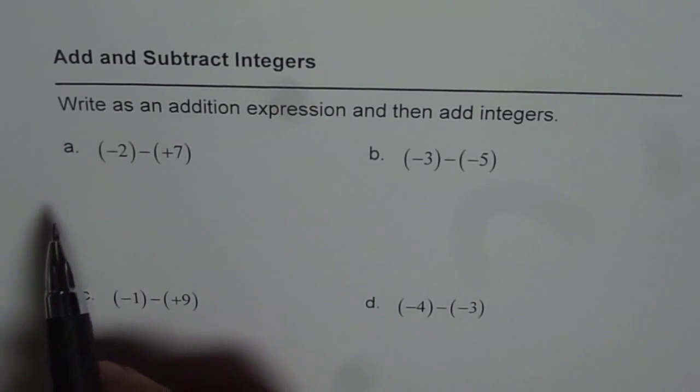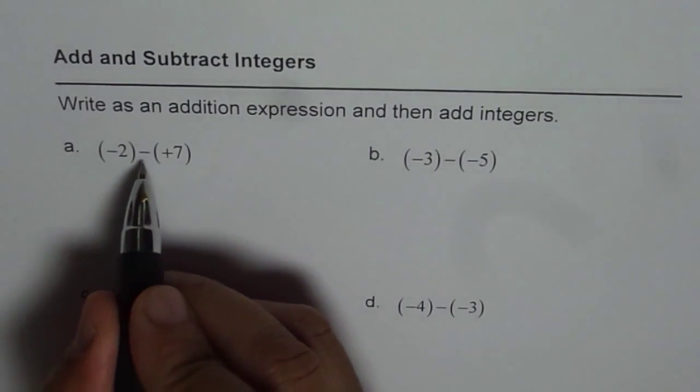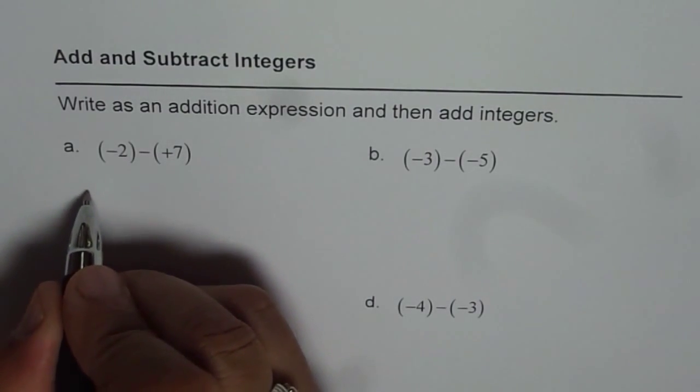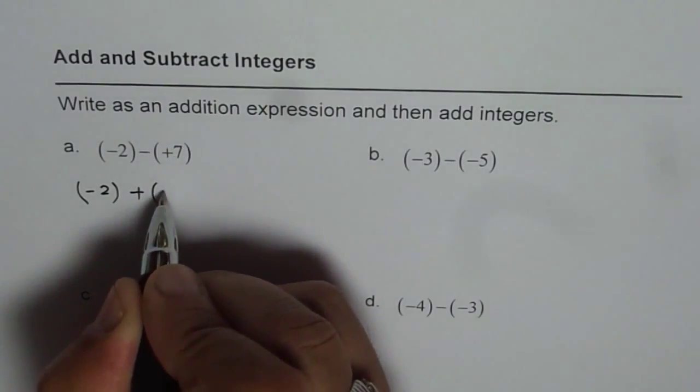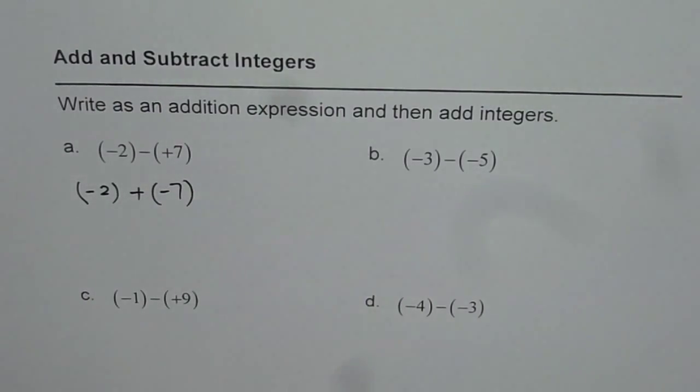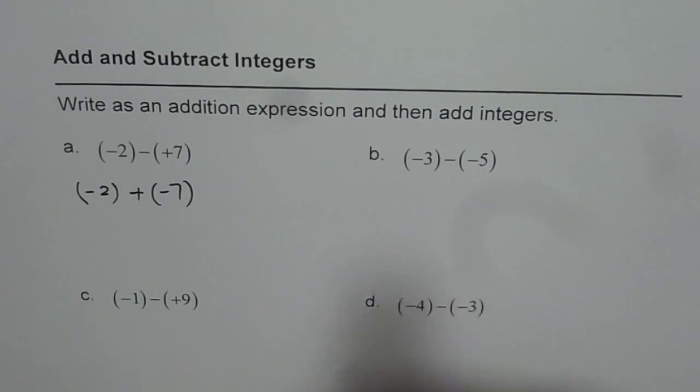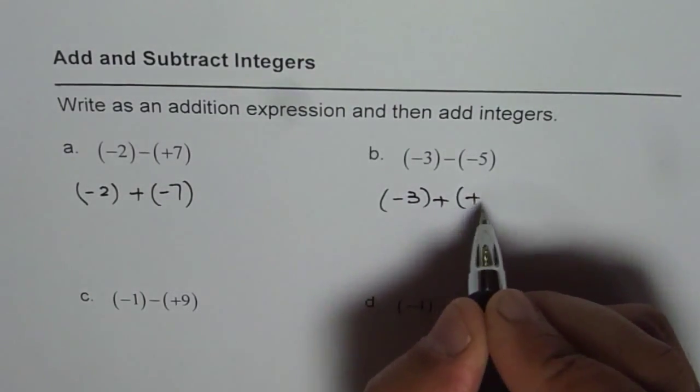Let's start with A which is minus two minus of plus seven. So if I want to write this minus as positive, I need to reverse the sign. So I get minus two. I'll write this as positive and reverse sign for seven. So I get minus seven. Let me do the same thing for part B also. I should get minus three plus of plus five.